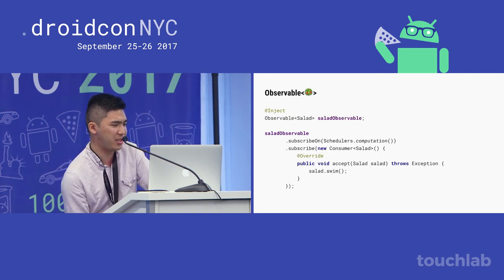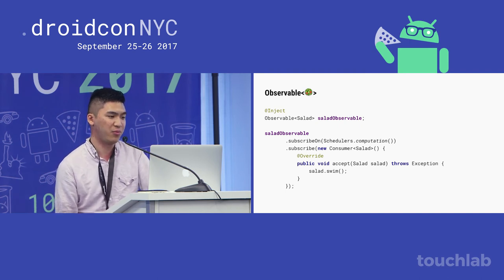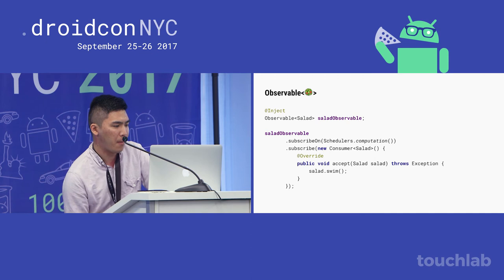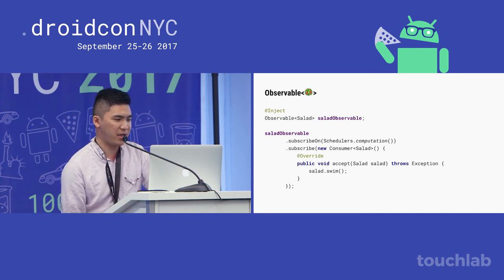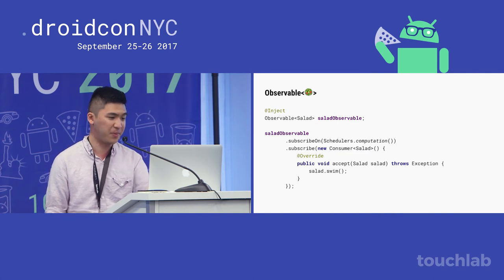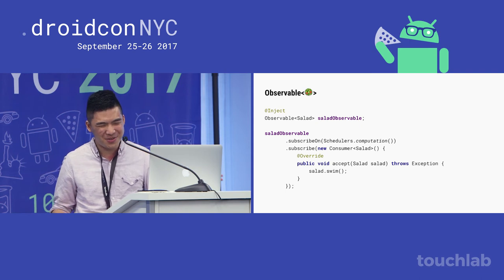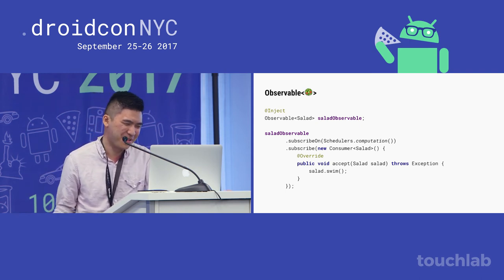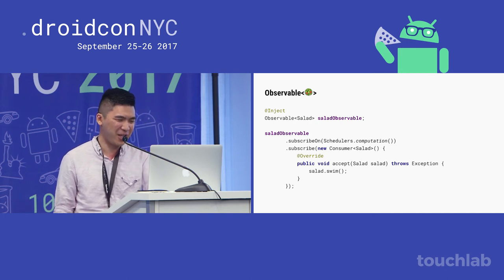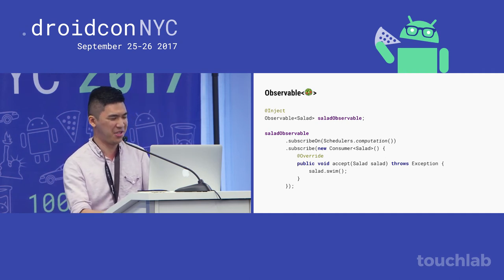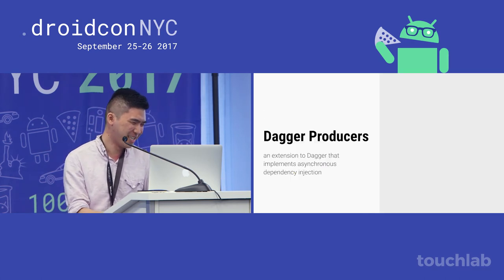You can still do @Inject on the observable salad and subscribe. I've specified we're doing this on a computation scheduler — you should probably have your own dependency injection scheduler. When the salad is created, it will be passed to the consumer and you can do whatever you want. This approach reduces boilerplate, and because this is a singleton you can reuse that instance across different activities. You can subscribe multiple times and get the same instance.